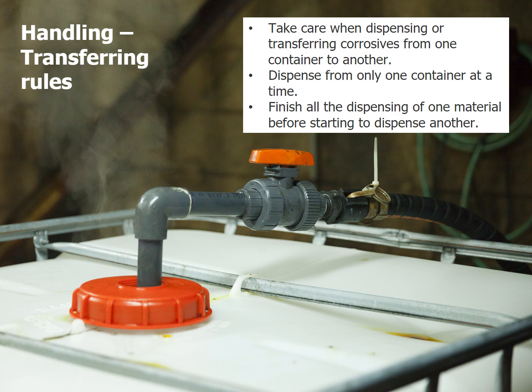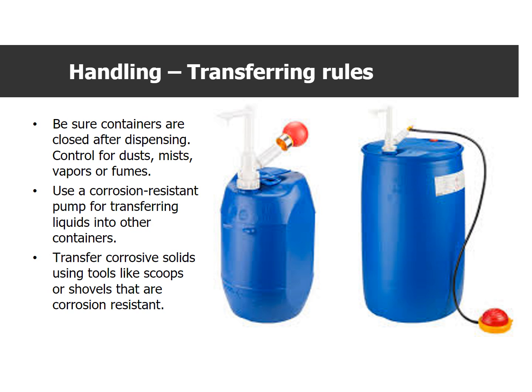Take care when dispensing or transferring corrosives from one container to another. Dispense from only one container at a time. Finish all the dispensing of one material before starting to dispense another. Be sure containers are closed after dispensing. Control for dusts, mists, vapors, or fumes. Use a corrosion resistant pump for transferring liquids into other containers. Transfer corrosive solids using tools like scoops or shovels that are corrosion resistant.